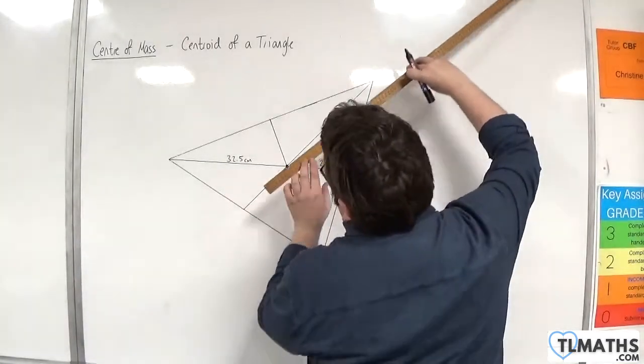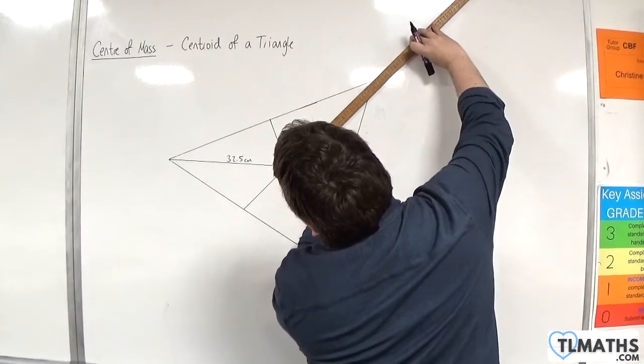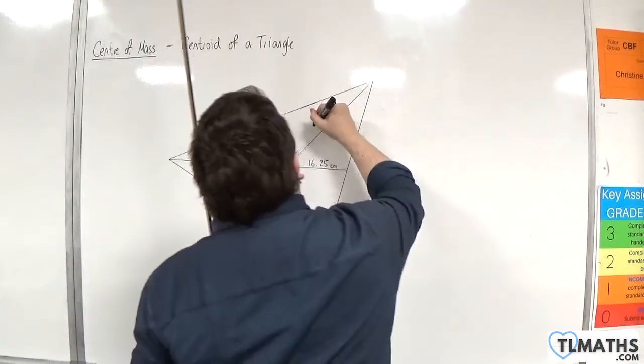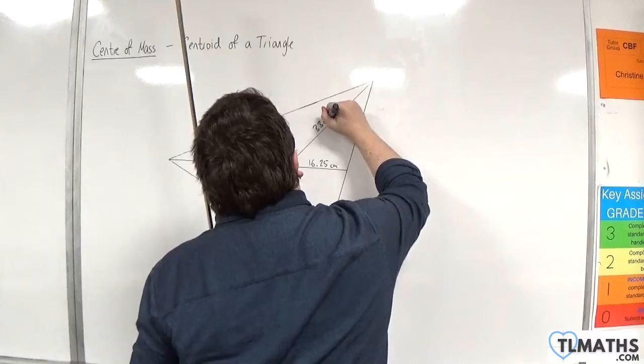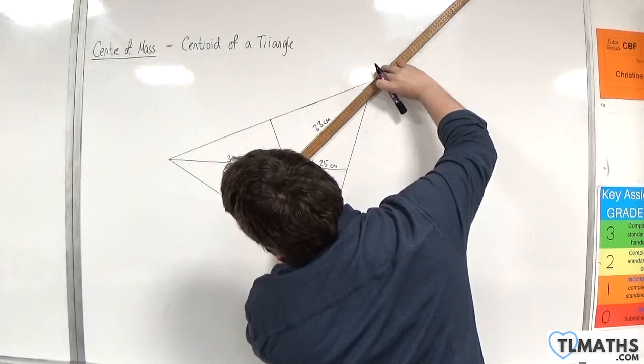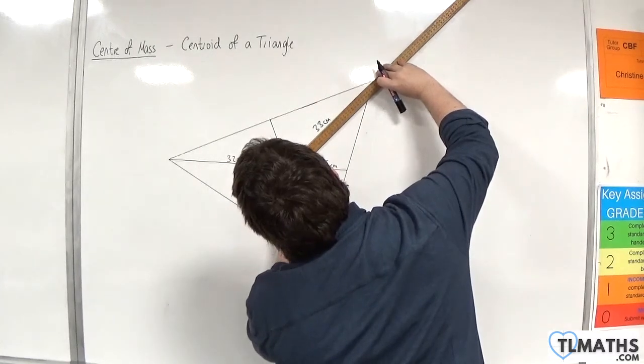Okay, so let's measure this bit. So that bit is 33. And this bit is 16 and a half.